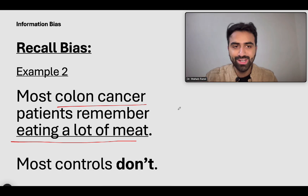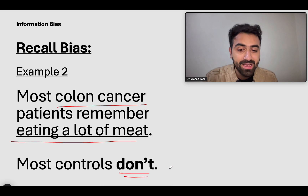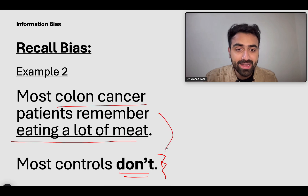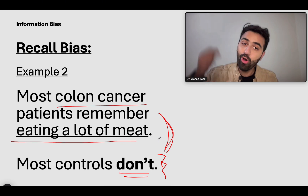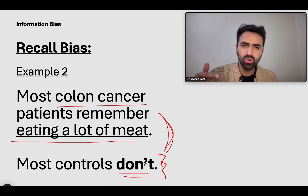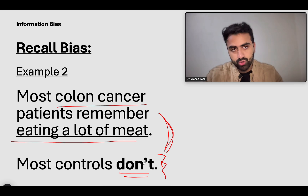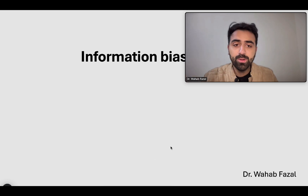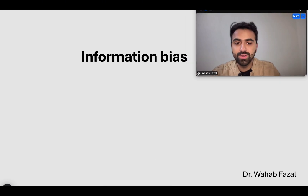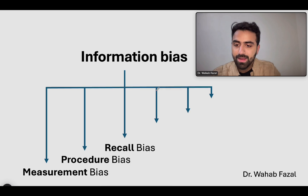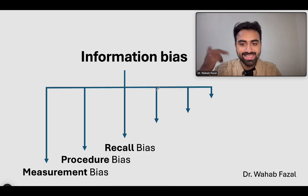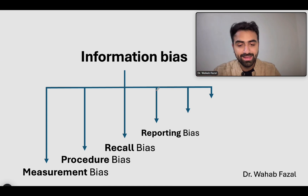Most controls don't remember eating a lot of meat. The odds of cases remembering relative to controls is very high — all the cases remember eating meat, while controls are unsure. So we've now covered three types of biases: measurement bias, procedure bias, and recall bias. Recall bias: people with negative outcomes remember the bad exposure really well.